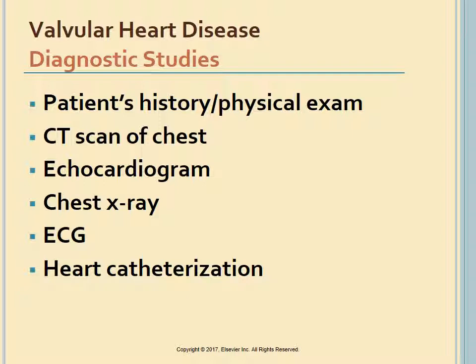Diagnosis of valvular heart disease includes patient history, physical examination, and a variety of tests. A CT scan of the chest with contrast is the gold standard for evaluating aortic disorders. Echocardiogram reveals valve structure, function, and heart chamber size. Trans-esophageal echocardiography and Doppler color flow imaging help diagnose and monitor disease progression. Chest x-rays reveal heart size, altered pulmonary circulation, and valve calcification. ECG identifies heart rate, rhythm, and any ischemia or ventricular hypertrophy. Heart catheterization detects pressure changes, records pressure differences across valves, and measures valve opening size.